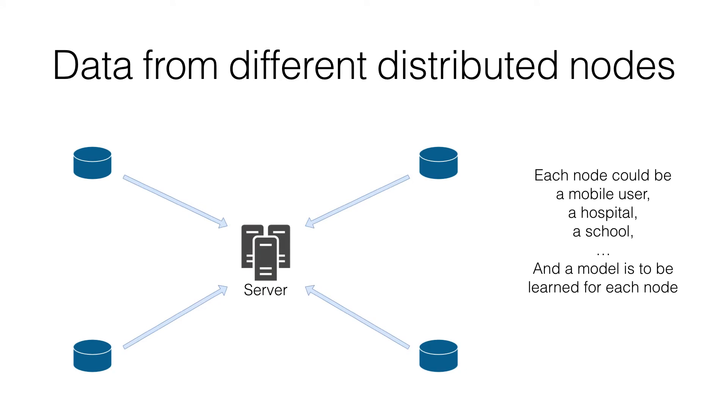As an alternative, we could consider collecting data from different nodes to a server and perform multi-task learning centrally. Each node could be regarded as a task, and the relatedness between tasks could be exploited to help learn a better predictive model for each node. However, we are faced with issues of data privacy and cost of data transmission when collecting data from different sources.